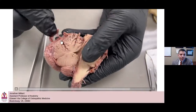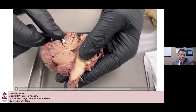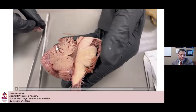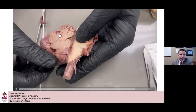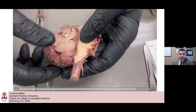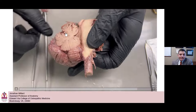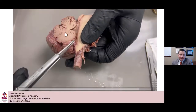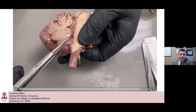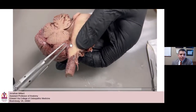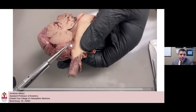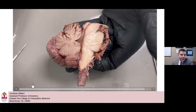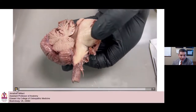Picking away a little of the arachnoid mater and exaggerating the primary fissure of the cerebellum gives a nice view of the path that CSF would travel through.